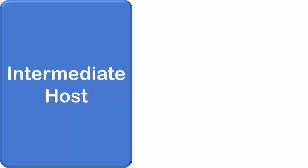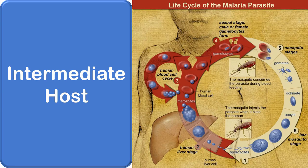The intermediate host is the host in which the larval stage of the parasite lives or asexual multiplication takes place. Humans are the intermediate host for the malaria parasite, in which sporozoites injected by the mosquito develop into mature parasitic forms called merozoites. These merozoites keep multiplying inside human cells asexually.